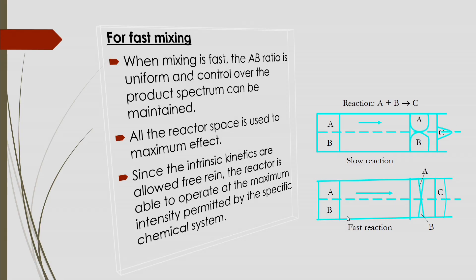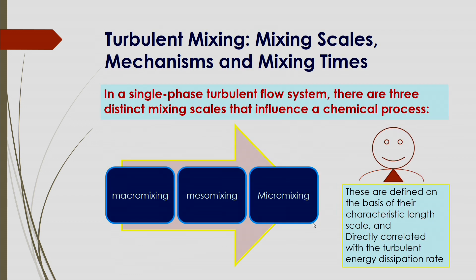For fast mixing, the A-B ratio should be uniform, providing control over the product spectrum, and reactor space is used to maximize this effect. Intrinsic kinetics are allowed to operate freely so the reactor can operate at maximum intensity permitted by the specific chemical system. In a single-phase turbulent flow system, there are three distinct mixing scales that influence a chemical process: macromixing, mesomixing, and micromixing.